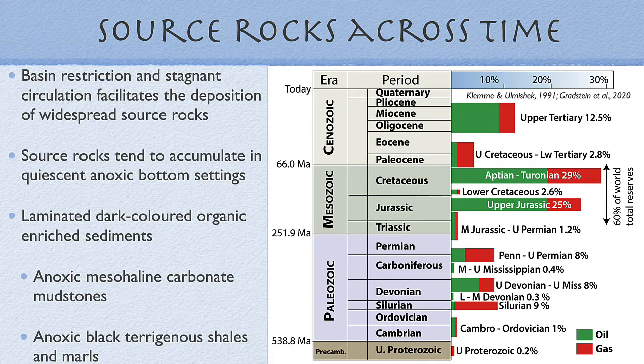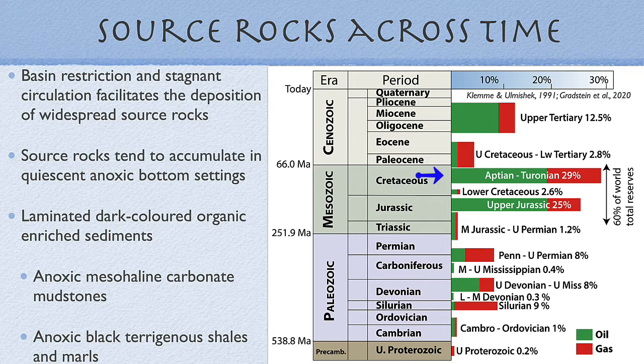Those six periods, starting from the base of the column, are: the Silurian at about 9% of world reserves; the Upper Devonian at about 8%; the Pennsylvanian to Lower Permian at about 8%; the Upper Jurassic at about 25%; the Middle Cretaceous at some 29%; and the Oligocene to Miocene producing some 13% of the world's reserves.